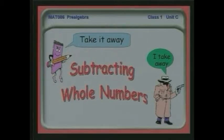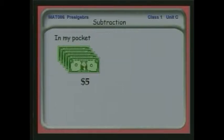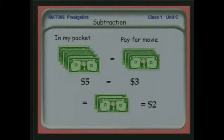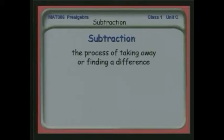Let's switch gears and talk about subtracting whole numbers. Addition was a process of putting things together. Subtraction is a process of taking away. For example, I have $5 in my pocket and I want to pay for a movie — $3. My question is, how much do I have left for snacks? $2. This illustrates the process of subtraction — it's the process of taking away or finding a difference.